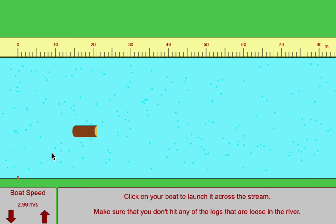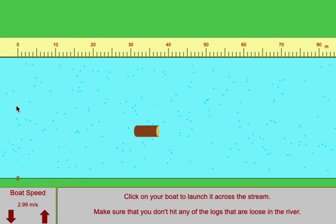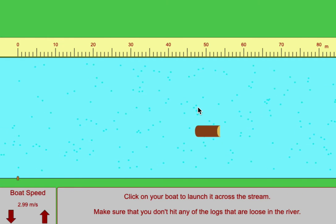Try not to hit the logs. You're going to fire your boat perpendicular across the stream. The current will carry the boat downstream, and you want to see how the speed setting on the boat will affect the amount it drifts down the river.